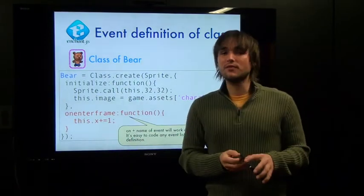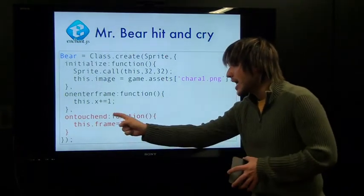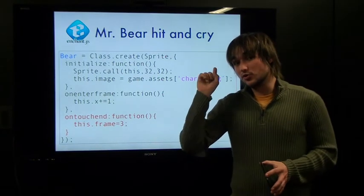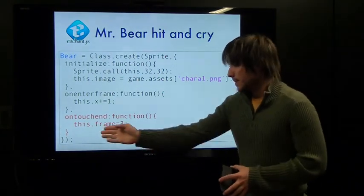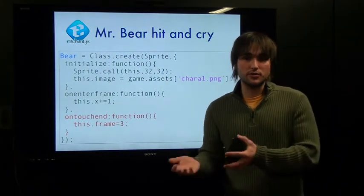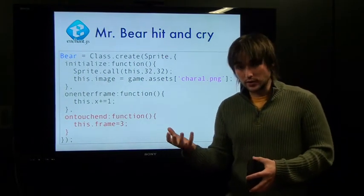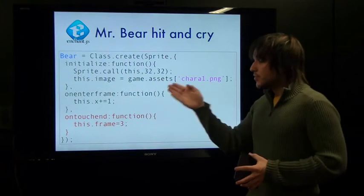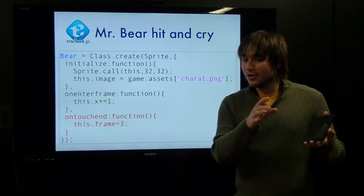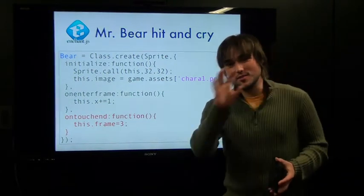You can add as many event listeners as you want — not just an onEnterFrame event, but also an onTouchEnd event. When a user clicks and lets go of a bear, this.frame equals three. We saw this in a video earlier where we change the frame of the bear from zero to three, changing it from your brown bear chilling doing nothing to the crying bear. Here we've combined those two: it'll be moving across the screen, and if you click it the frame will change. But you're going to have to be quick about how you click it, because it's going to be moving across the screen.